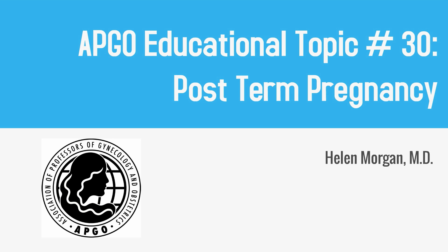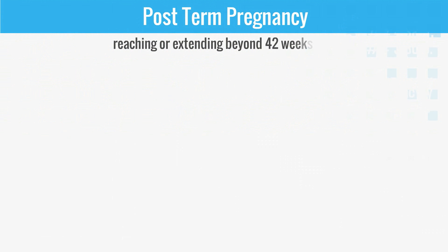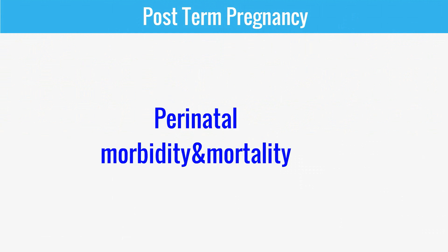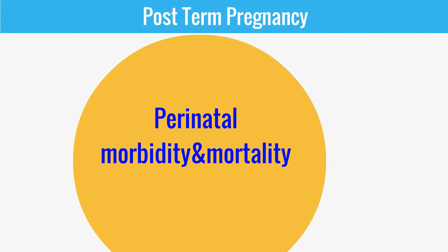APCO Educational Topic Number 30: Post-Term Pregnancy. Post-term pregnancy is defined as reaching or extending beyond 42 weeks estimated gestational age. The incidence of post-term pregnancy in the United States is 5.5%. In this video, we will review how perinatal morbidity and mortality increase with a prolonged pregnancy.